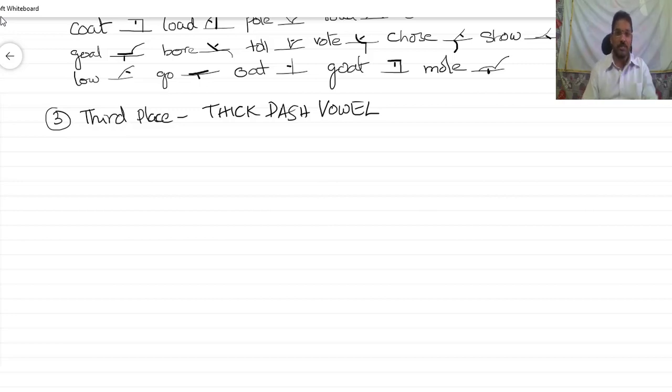So Thick Dot Vowel first place DGSM, same continues for Thick Dash also. Standing alone first place. First, what is this third place oval?